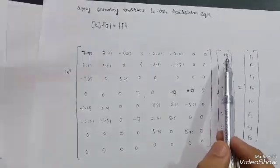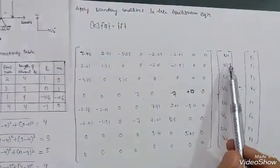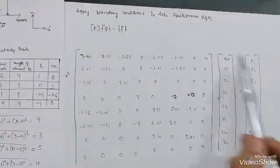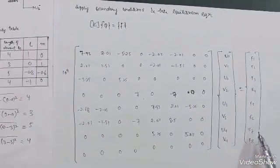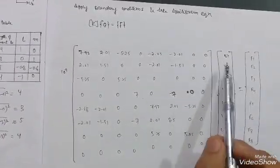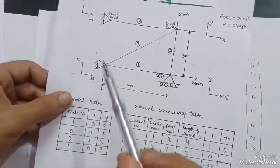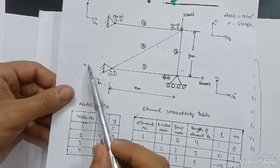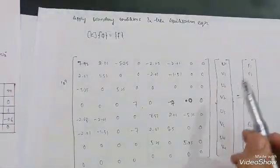As you can see in the figure, u1, v1, u2, v2 are the nodal displacements. I have put them in the equilibrium equation. Instead of F you have forces F1 through F8. Now I apply boundary conditions — these two supports are fixed, so u1, v1 is zero and u4, v4 is zero.